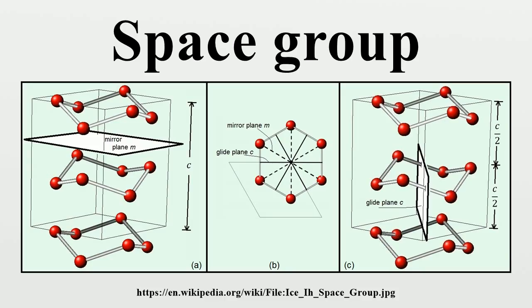Notation for Space Groups: There are at least ten methods of naming space groups. Some of these methods can assign several different names to the same space group, so altogether there are many thousands of different names. Number: The International Union of Crystallography publishes tables of all space group types, and assigns each a unique number from 1 to 230. The numbering is arbitrary, except that groups with the same crystal system or point group are given consecutive numbers.